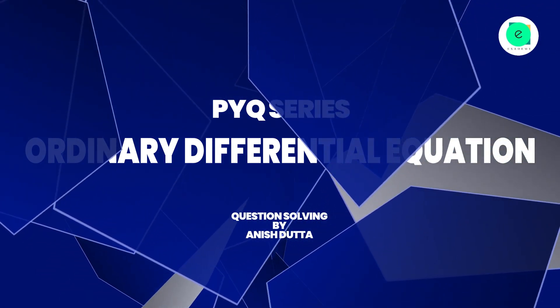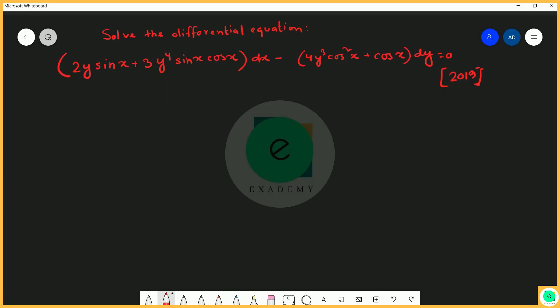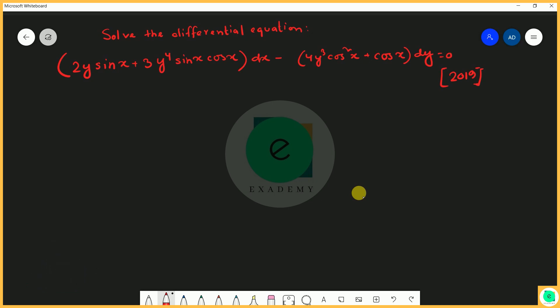Welcome to Excitingly Redefining Education. Today we will start equations of first order and first degree. This question is from the 2019 UPSC mains exam: solve the differential equation 2y sin x plus 3y⁴ sin x cos x dx minus 4y³ cos²x plus cos x dy equals 0. This is of the form M dx plus N dy equals 0.